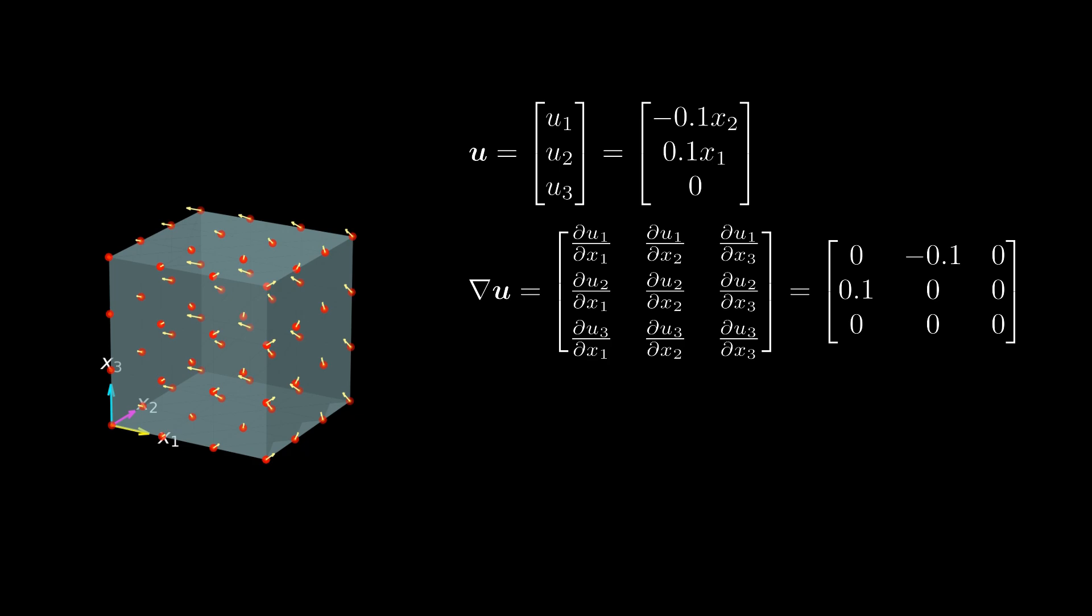So let's do it. Let's write down the displacement gradient minus the skew-symmetric part of it. After some rearrangements, we get this. Here we have it. This is the formula for the strain tensor. Now we know why this formula looks strange at the first glance. The strain tensor is the displacement gradient minus all contributions that arise from rotations. What is left is the symmetric part of the displacement gradient.